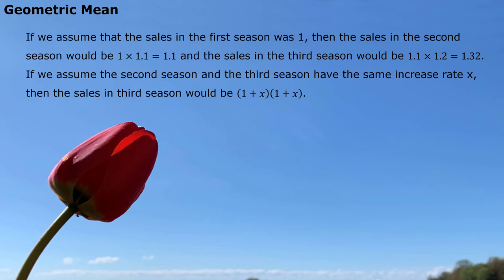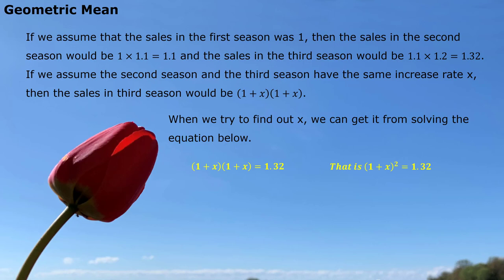When we try to find out x, we can get it from solving the equation below. That means (1 + x) multiplied by (1 + x) would equal 1.32, the sales for third season. From here we get (1 + x) squared equals 1.32. Then we have 1 + x equals square root of 1.32. We solve it. x turned out 14.89%. So you can see it's not 15%. The average increase rate for second season and third season is 14.89%.